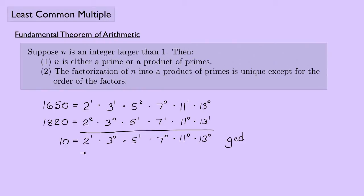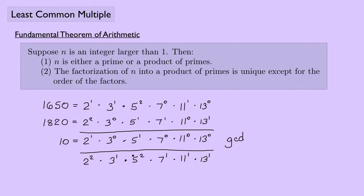Now, what if instead of taking the smaller of the two exponents, I took the larger? So between 2 to the first and 2 to the second, I take 2 to the second. Then 3 to the first, 5 to the second, 7 to the first, 11 to the first, and 13 to the first. As you can imagine, this gives a much larger number — it ends up being 300,300. And this has a name: it's called the least common multiple.